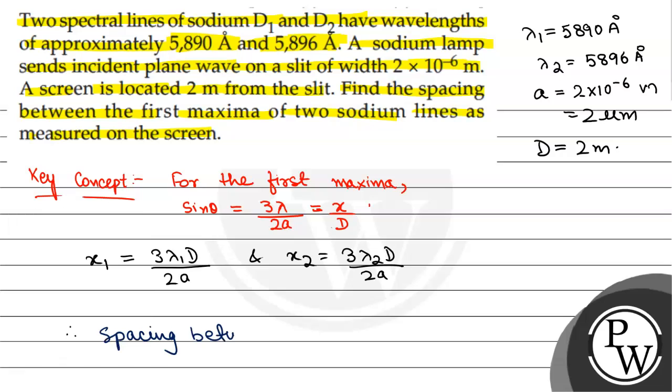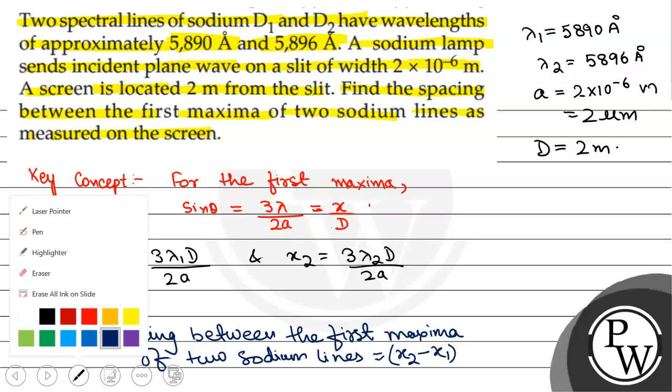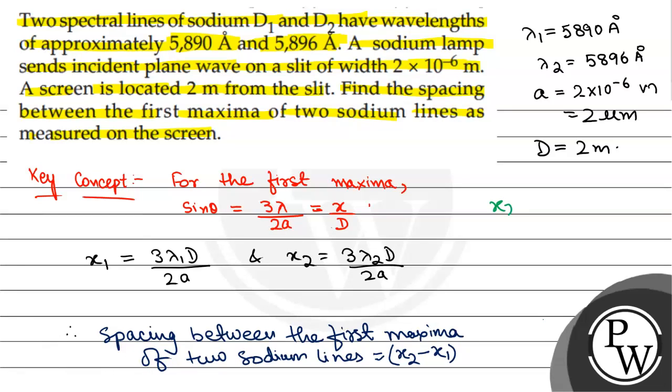The spacing between the first maxima of two sodium lines equals x₂ - x₁. Now we'll calculate x₂ - x₁. Taking 3D/(2a) common, we get: x₂ - x₁ = (3D/2a)(λ₂ - λ₁).